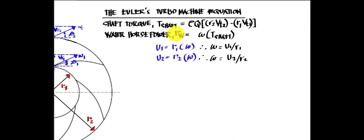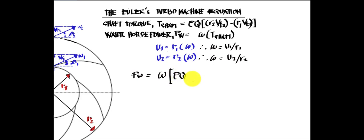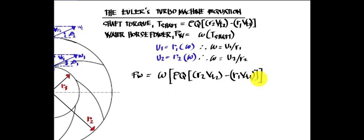We can rewrite the water horsepower equation by distributing the angular velocity through the expression: Pw equals angular velocity times density times volume flow rate times (r2 times Vt2 minus r1 times Vt1). Substituting the angular velocity expressed as u2/r2 and u1/r1, and then canceling the common r2 and r1 terms, we simplify the equation.